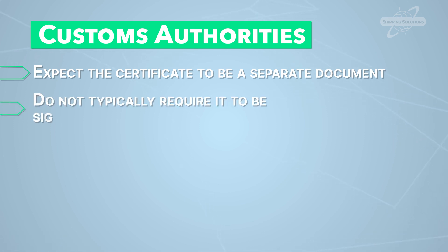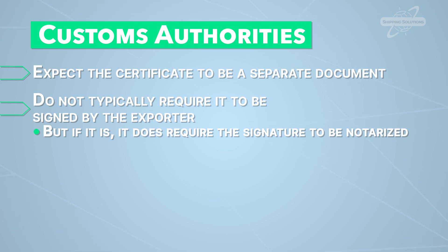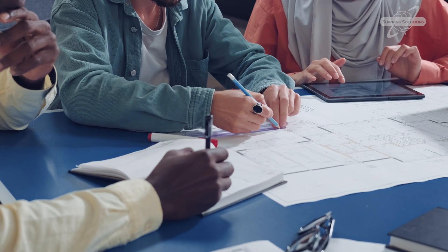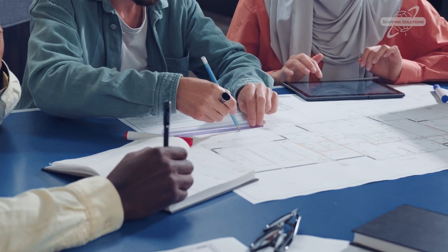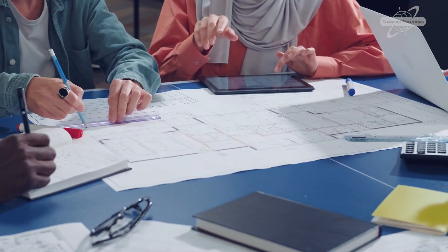Customs authorities do not typically require it to be signed by the exporter, but if it is, it does require the signature to be notarized. The customs authorities in the country of import may require that a Chamber of Commerce add its proof of review to the exporter's certificate of origin, through the addition of the Chamber's official embossing stamp and the signature of an authorized Chamber representative.